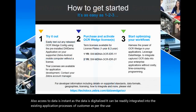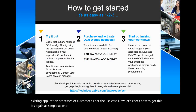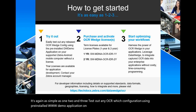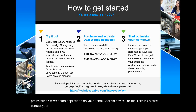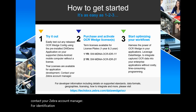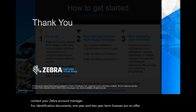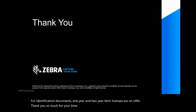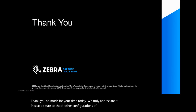Now let's check how to get this — it's again as simple as one, two, and three. Test out any OCR Wedge configuration using the pre-installed DW Demo application on your Zebra Android device. For trial licenses, please contact your Zebra account manager. For identification documents, one-year and two-year term licenses are on offer. Thank you so much for your time today — please be sure to check other configurations of OCR Wedge.